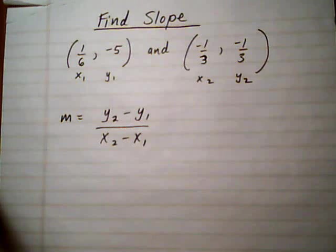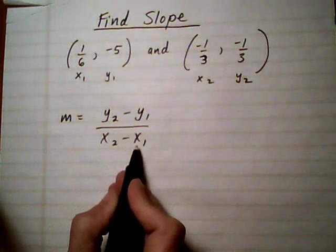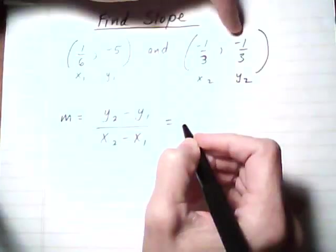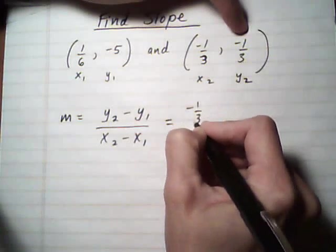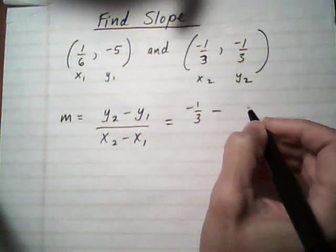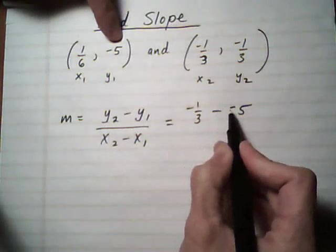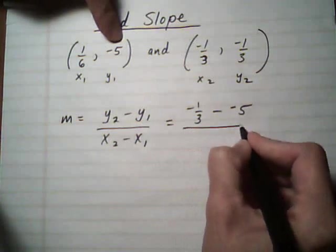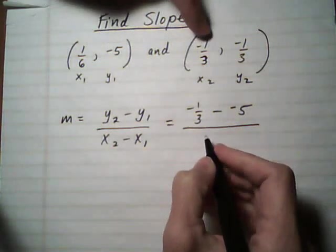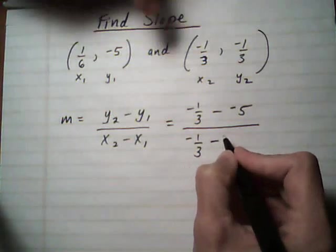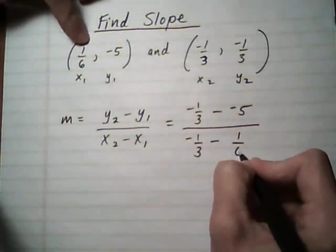And then you go ahead and feed them into the positions in the slope formula. So we get y2 minus one third, take away y1 minus one fifth. Watch the double negative here. We're taking away a negative, and that's divided by x2 minus one third, take away x1, one sixth.